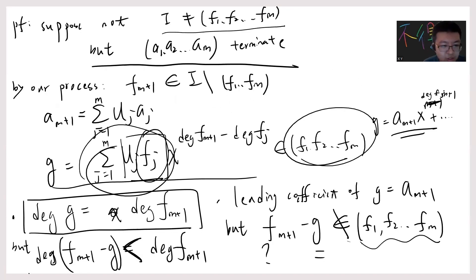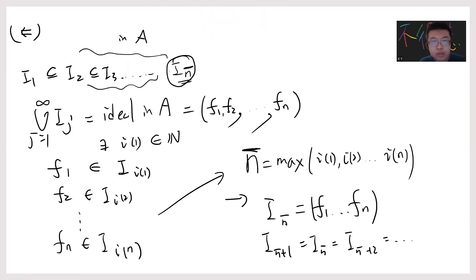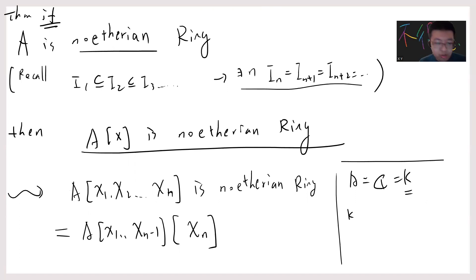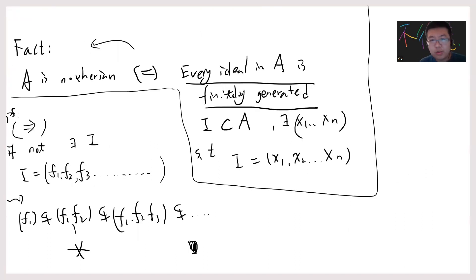Since we have a contradiction, the only case is that I must equal the ideal generated by f₁, ..., fₘ, so I is finitely generated. This is the Hilbert Basis Theorem. This theorem is important and I should make a video on it. Next time I will talk about Weak and Strong Nullstellensatz, which is also important if you want to do algebraic geometry. See you guys.